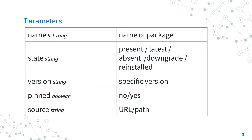For the other options you can refer to the manual. I would like to mention some additional parameters that might be useful. The pinned parameter allows you to pin a Chocolatey package to suppress upgrades — during the next upgrade for all packages, Chocolatey will automatically skip pinned packages. Source allows you to specify a local repository for packages if available.